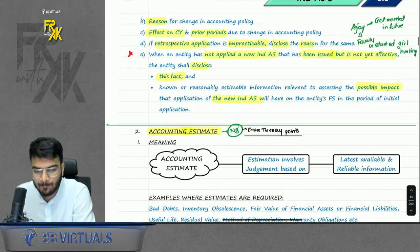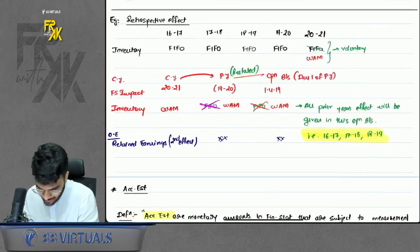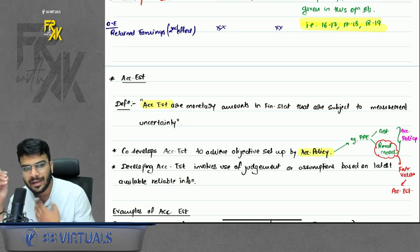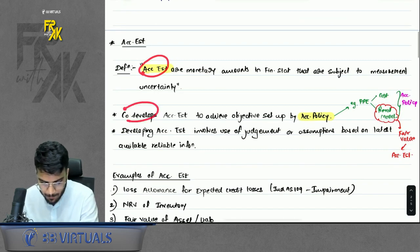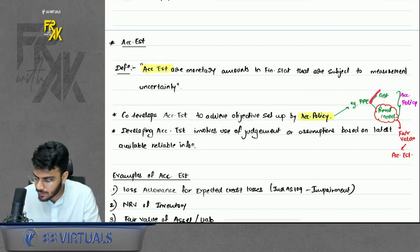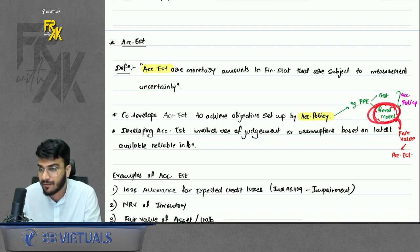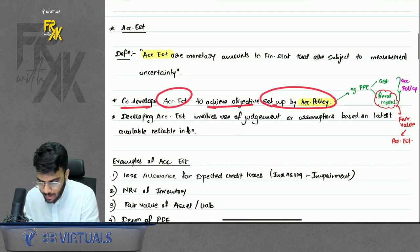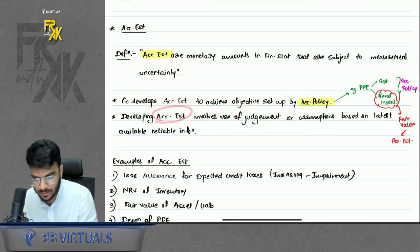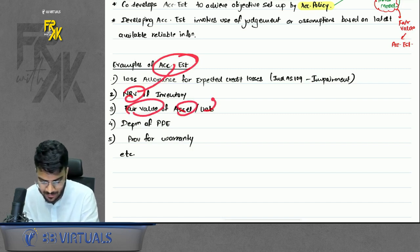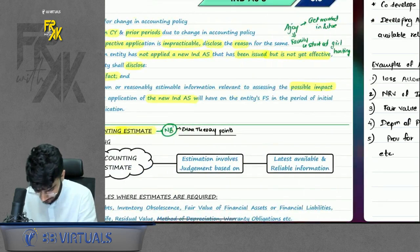Next: accounting estimates. Whenever there is uncertainty relating to measurement of any asset, liability, income, or expense, that is an accounting estimate. Estimates are step two of policy — they achieve the objective set by the policy. Example: applying cost model or revaluation model is a policy; finding the fair value under revaluation model is the accounting estimate. Examples of estimates: loss allowance for expected credit loss, NRV of inventory, fair value of assets/liabilities, depreciation of PPE, provision for rent.